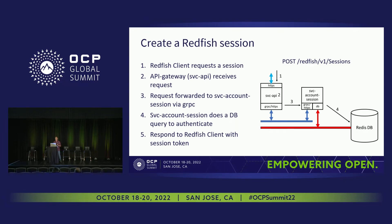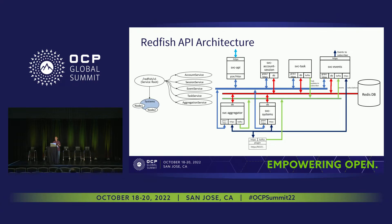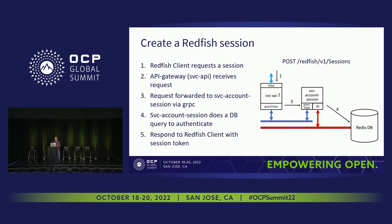This is a simple flow of what happens to create a session. You come into the API. There are three gRPC connections between systems, a Kafka connection in green, and a database connection. In a simple session, you go to the API gateway, a request is forwarded to account service, sessions are created, and we respond with a session token — which is what the Redfish specification requires. When you create a session, we give you a session token, and you can use it for the rest of your sessions because you've been authenticated to the Redfish service.